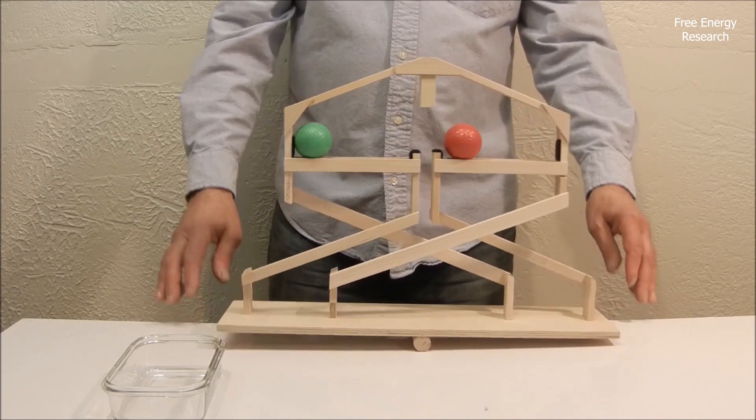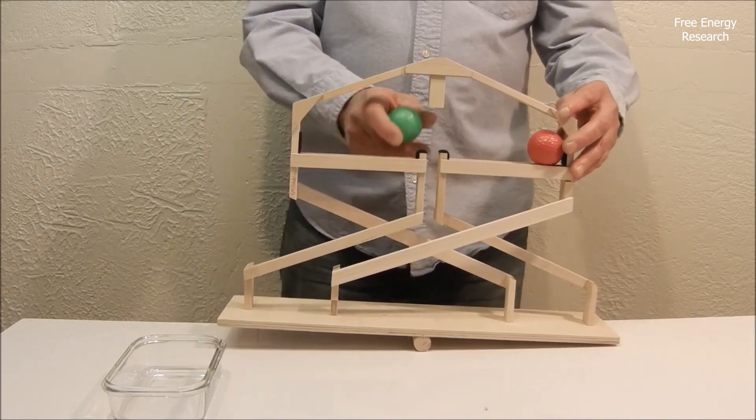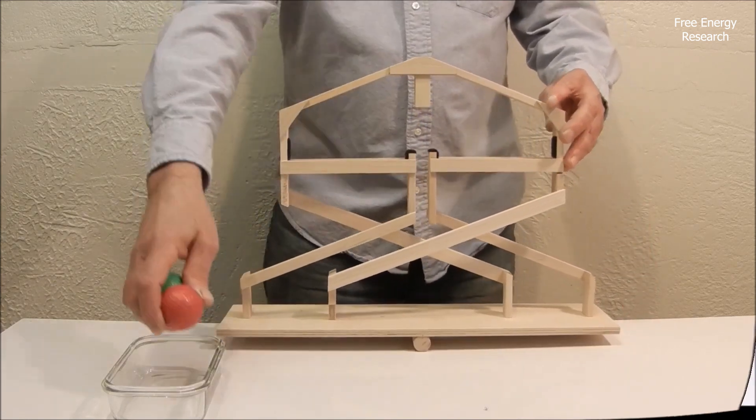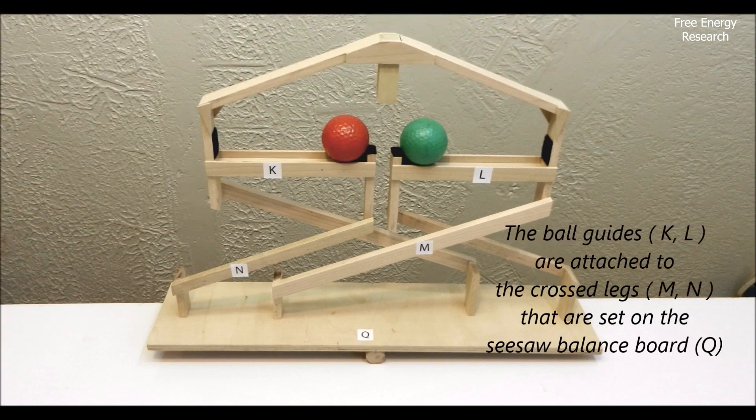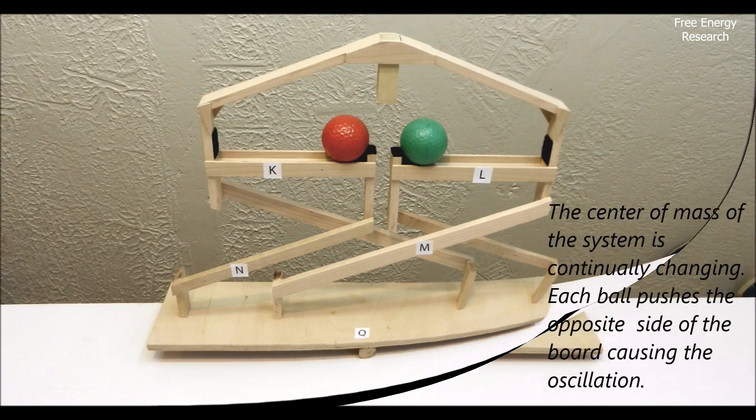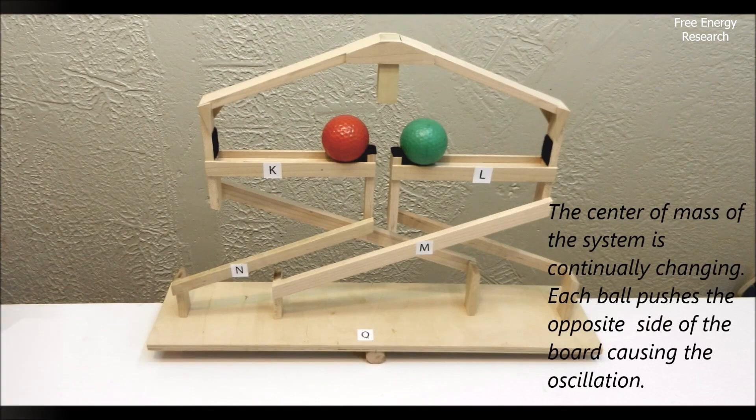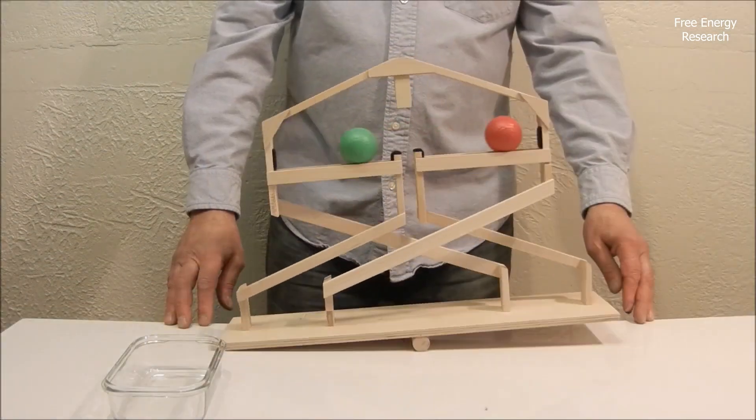The design is simple yet captivating, using incline tracks and precise tilting mechanisms to create a seemingly endless loop of motion. While not truly perpetual, as it eventually slows due to friction and energy loss, this machine is a brilliant example of how physics can be harnessed to create the illusion of never-ending movement.